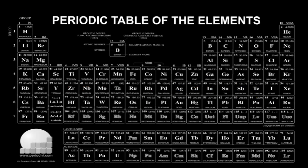We can look at the periodic table two ways: as a table of elements where each element is listed according to the number of protons it has and generally according to increasing atomic mass, or as a table that shows where all the electrons should be placed in an atom. The rows are called periods — a period equals a row on the periodic table.